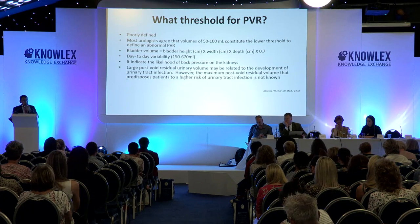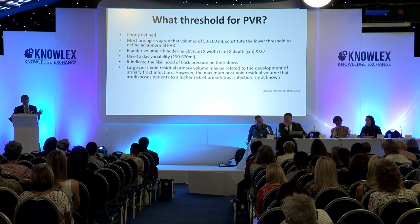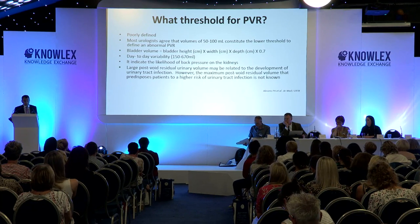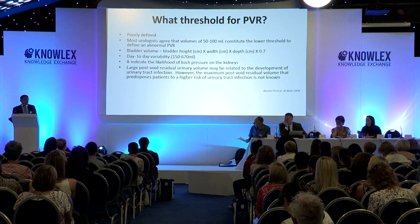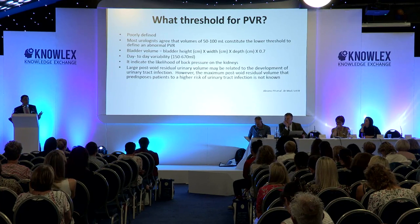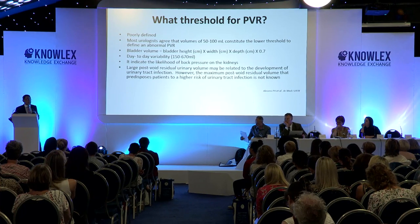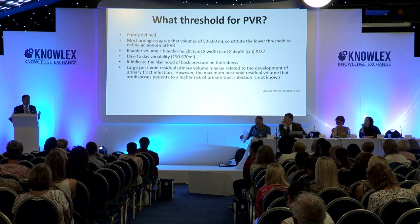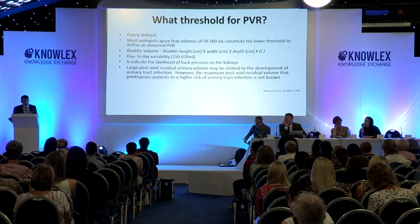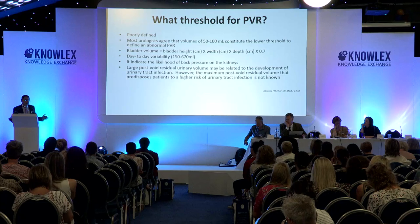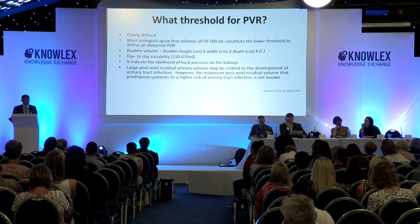Bladder volume is measured with a distended bladder: height times width times depth times 0.7 as a factor. It is variable across different days and variable in the same person. I scanned my own bladder at different times using the same technique and got different numbers. It does indicate a likelihood of back pressure on the kidneys and may predispose to other conditions, but that's as far as the evidence goes.